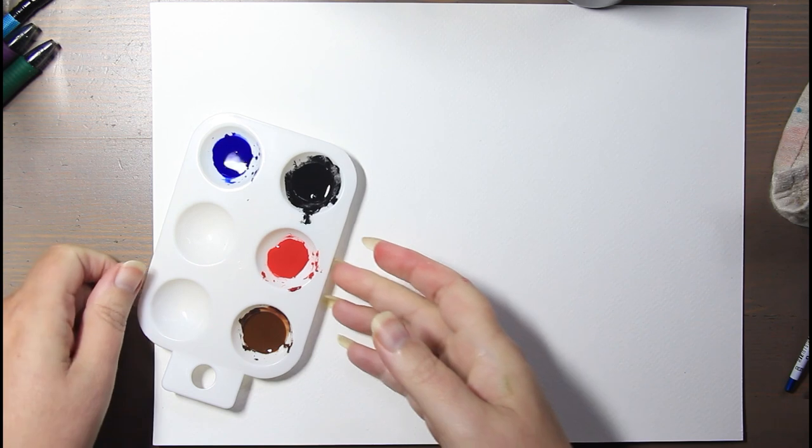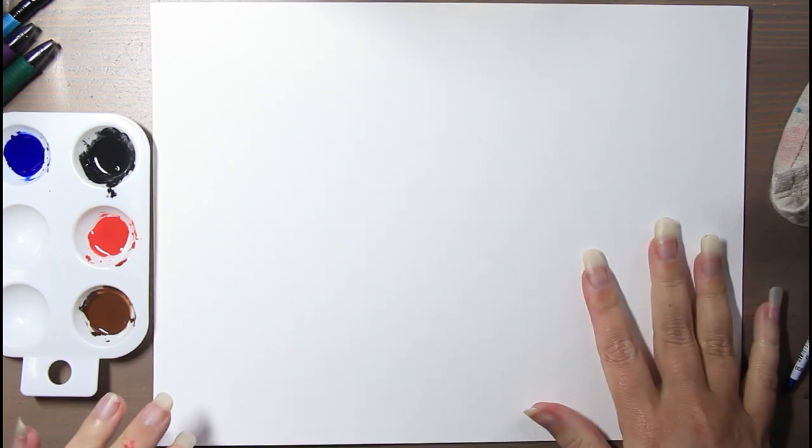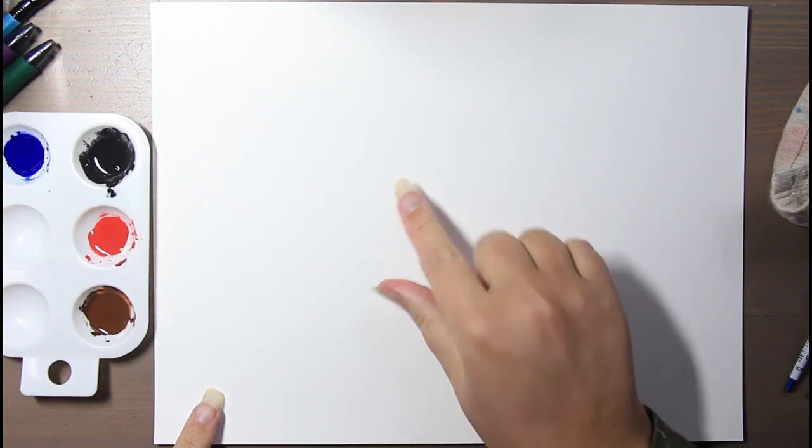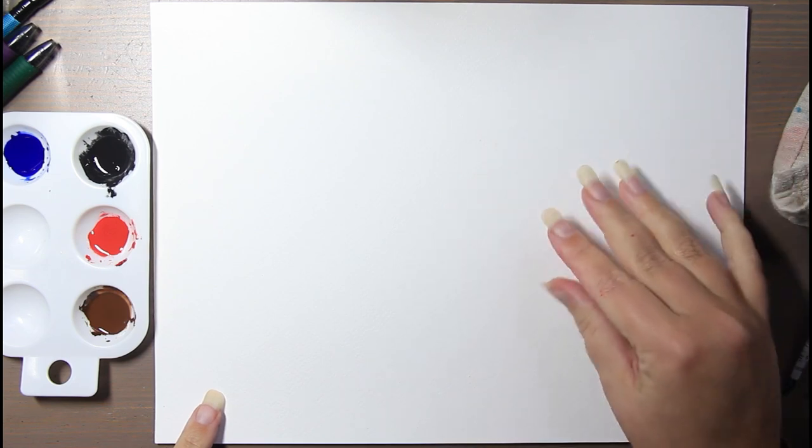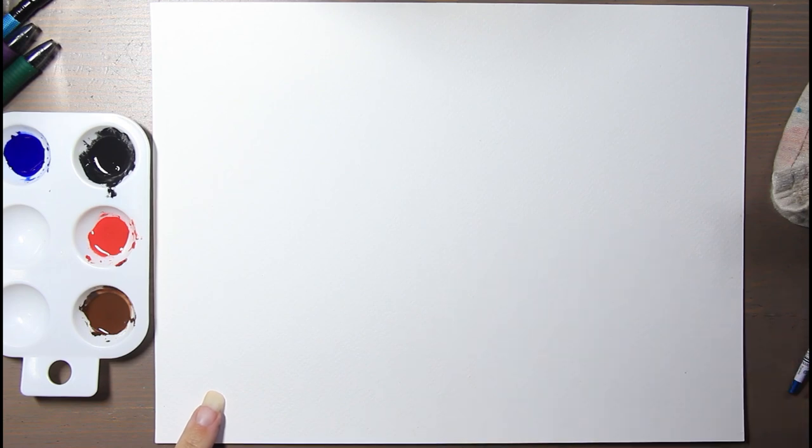So now one of the fun things to do with granulating watercolor is to apply a layer of water first. That way, when you lay the watercolor down, it immediately starts to bloom, cauliflower spread, and you can start to see the granulation and things pull apart.